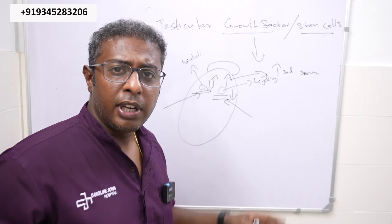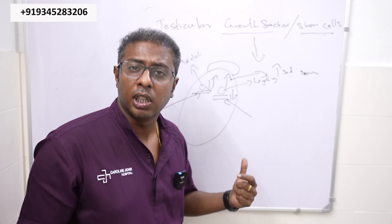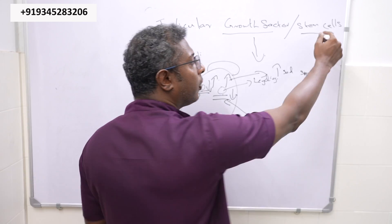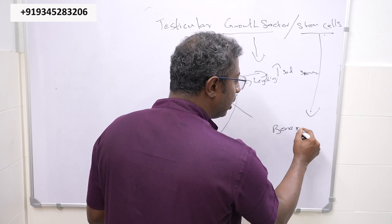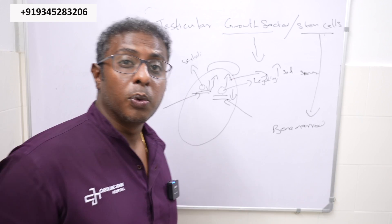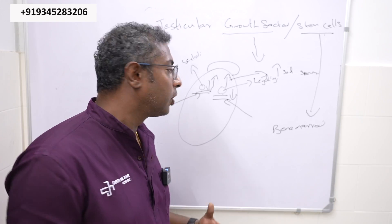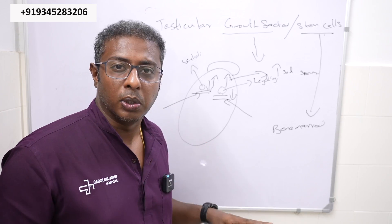In case of very poor function of the sertoli and ledic cells, then we go for the mesenchymal stem cells which is bone marrow stem cells. These stem cells will help to resume the function of the sertoli and ledic cells when the function is much lower.